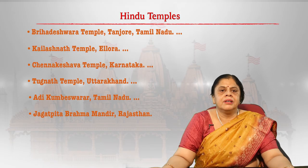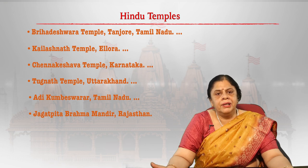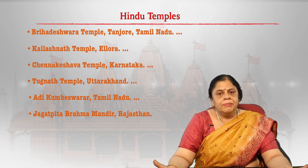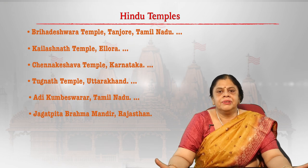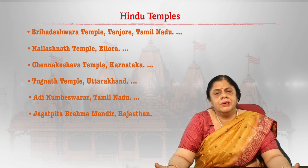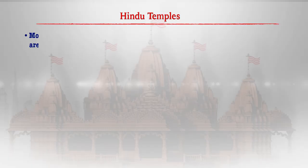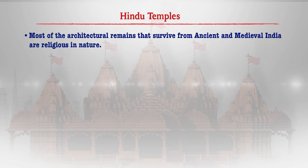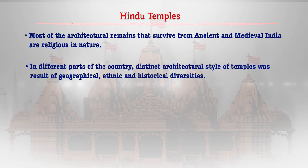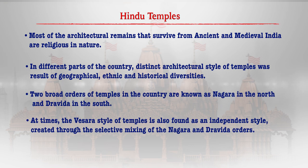Some of the famous temples are the Brihadeshwara Temple in Tanjore, Kailashanatha Temple at Ellora, Tunganath Temple in Uttarakhand, Adi Kumveshwar in Tamil Nadu, and Jagatpita Brahma Mandir in Rajasthan. Most of these architectural remains have survived from ancient and medieval India and are primarily religious in nature. In different parts of the country, we find distinct styles of temples as a result of geographical, ethnic, and historical diversities. We had the Nagara style in the north, the Dravidian style in the south, and the Vesara style which was an independent style created by mixing the Nagara and Dravidian orders.